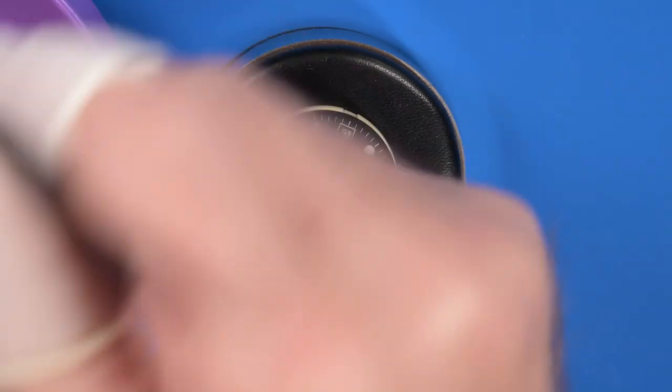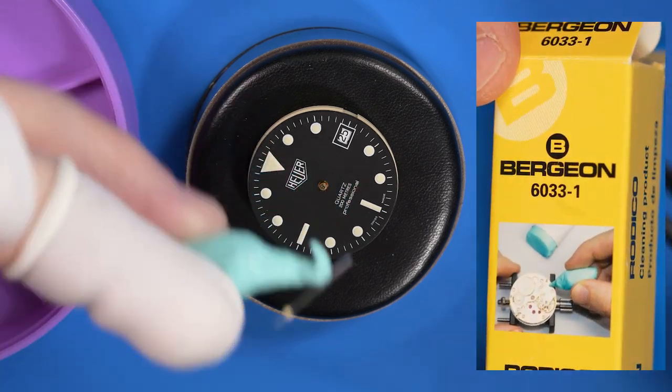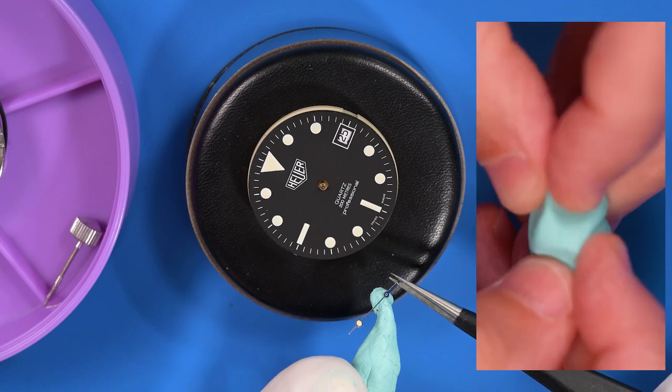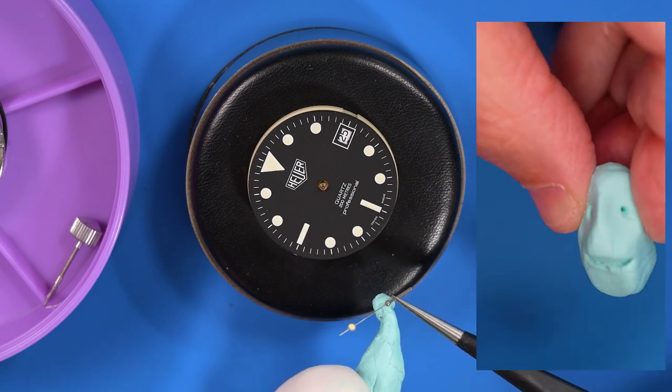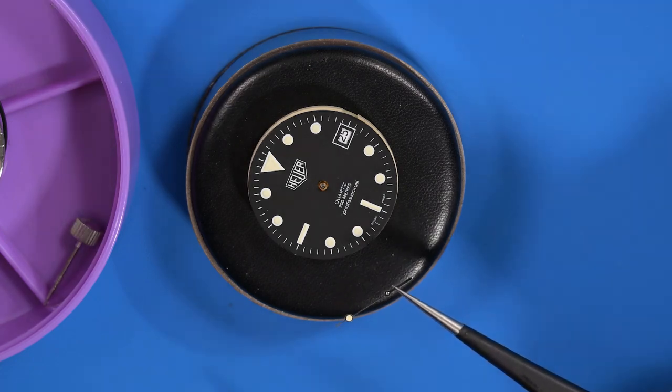I don't want to scratch the dial face with my tweezers picking up the second hand, so I'll use a piece of rodico, that green putty. Rodico is a staple of watchmaking which lets you pick up or hold tiny parts but can also absorb dust, grease, and oil off watch parts and lots, lots more.